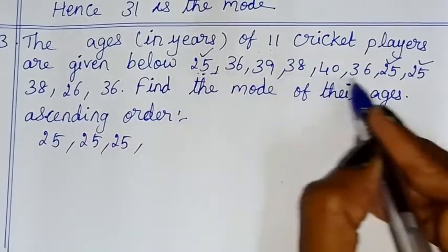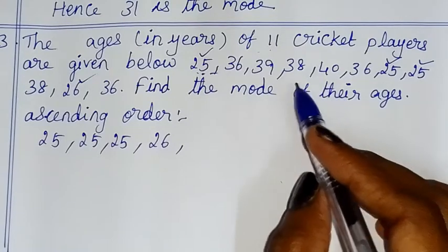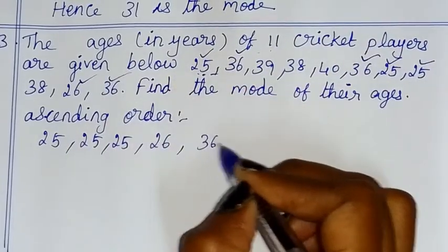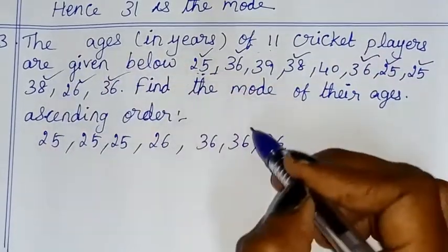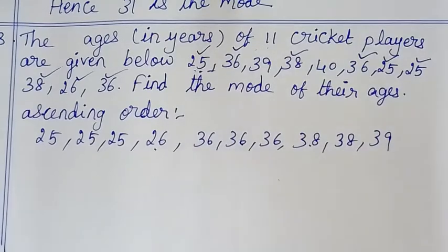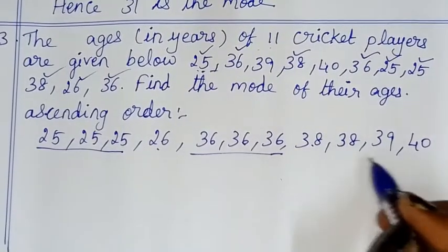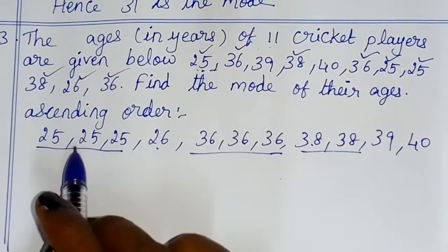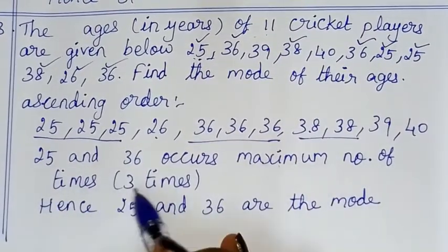25 repeats 3 times. 26, 27, 28, 29, 30, 31, 32, 33, 34, 35 are added once each. 36 repeats 3 times. 37 is added. 38 repeats 2 times. So both 25 and 36 each appear the maximum number of times, that is 3 times. Hence, 25 and 36 are both the mode.